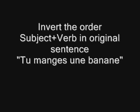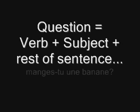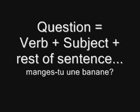The other way of doing this is by inverting the order of subject and verb. The affirmative sentence has this order: subject plus verb plus object — tu manges une banane. Tu is the subject, manges is the verb, and une banane is the object. Now all we have to do is invert the order. So it will be verb, subject, and object: manges-tu une banane? You add a dash between them and don't forget the question mark at the end.